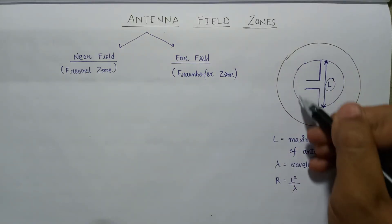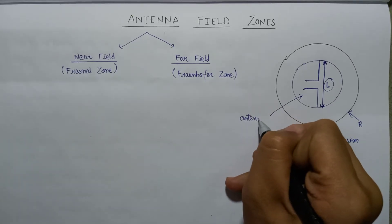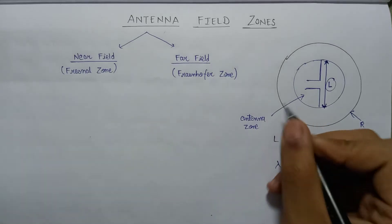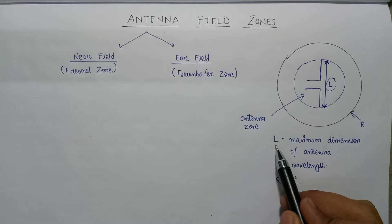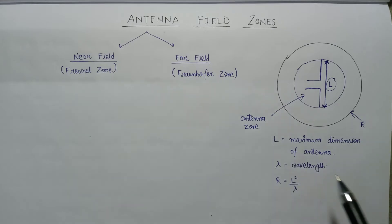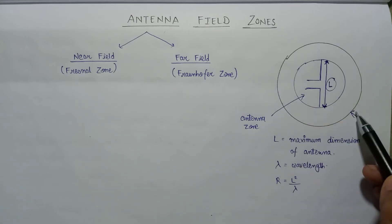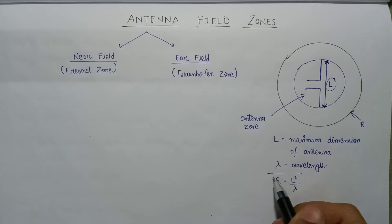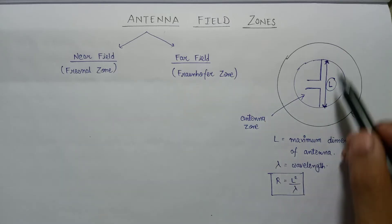Now let us draw one circle associated with this dipole antenna. Here L represents the maximum dimension of the antenna, and the wavelength is represented by lambda. The radius of the outer circle can be calculated by the formula R equals L squared over lambda. We will calculate the R value on the basis of the L and lambda values.